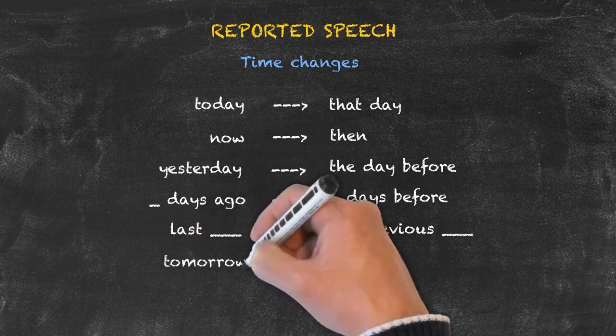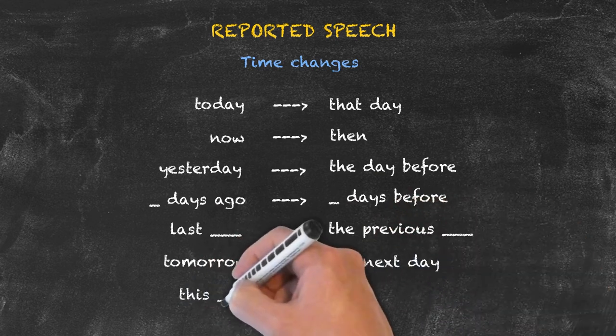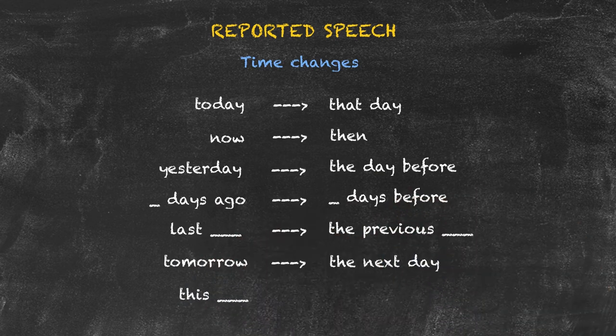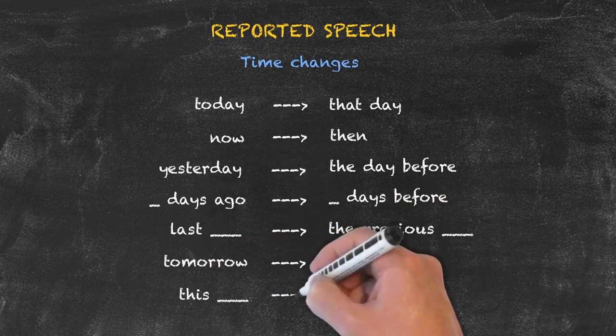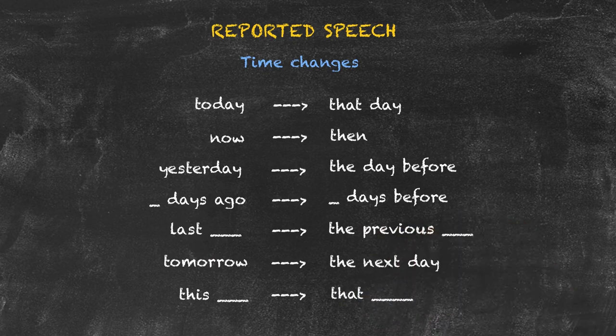'Tomorrow' changes to 'the next day,' and 'this week,' 'this month,' 'this year' go to 'that week,' 'month,' or 'year.'